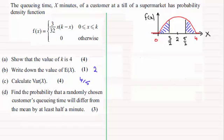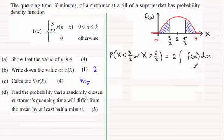So when it comes to working out that probability, let's just put an intro here. The probability the random variable x is less than 3 over 2 or it's greater than 5 over 2, well it's given by that area and I'm going to double it. That area is the integral of f of x, the probability density function, with respect to x, and it's going between the limits 0 to 3 over 2.